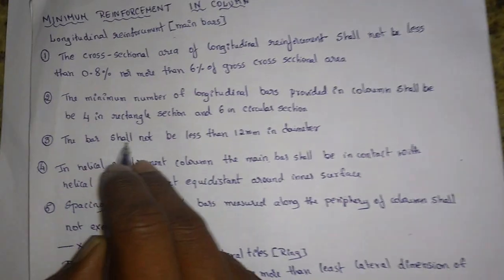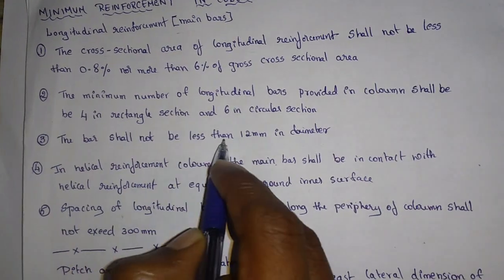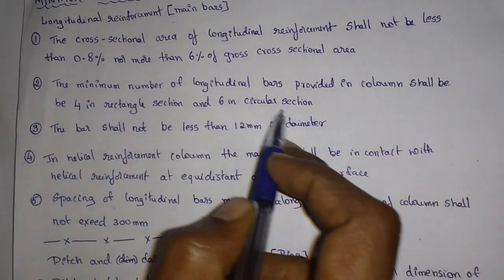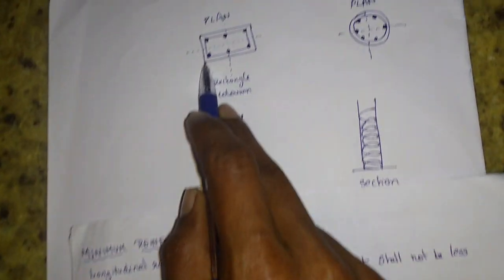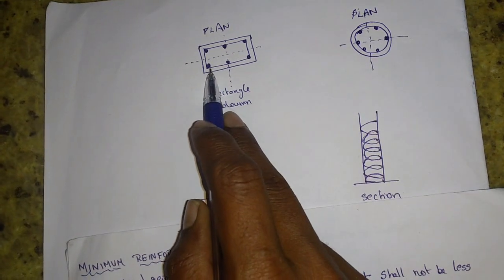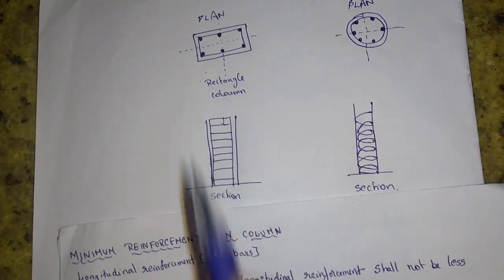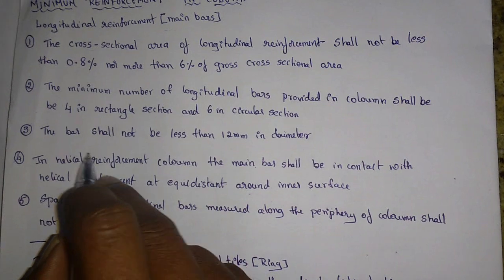The bars shall not be less than 12mm in diameter. The main bars should not be less than 12mm, meaning 10mm or 8mm bars should not be used.